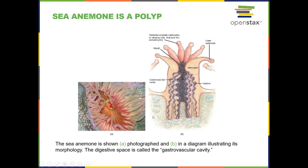The sea anemone has a polyp body style — it attaches at the bottom with a mouth in the center. Anything that touches the tentacles triggers the nerve net to contract the tentacles and move things toward the mouth. The organism uses cnidocytes to capture prey on the tentacles, then moves the tentacles toward the mouth to push food into the gastrovascular cavity for digestion.